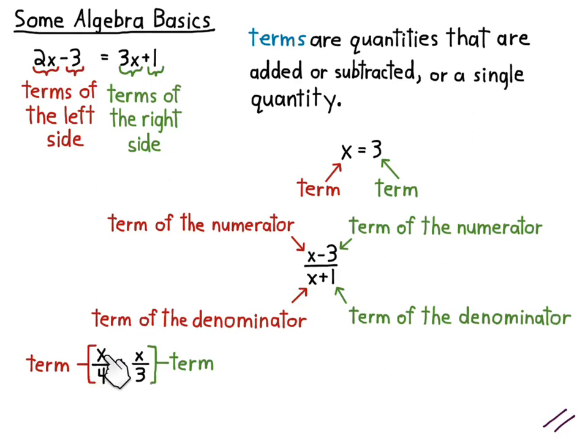x is not a term of the whole thing. x is a term of the numerator of x over 4. 4 is a term of the denominator of x over 4. x is a term of the numerator of x over 3. 3 is a term of the denominator of x over 3. Right? But 3 is not a term of x over 3 because it's not being added to x. It's being divided, actually.